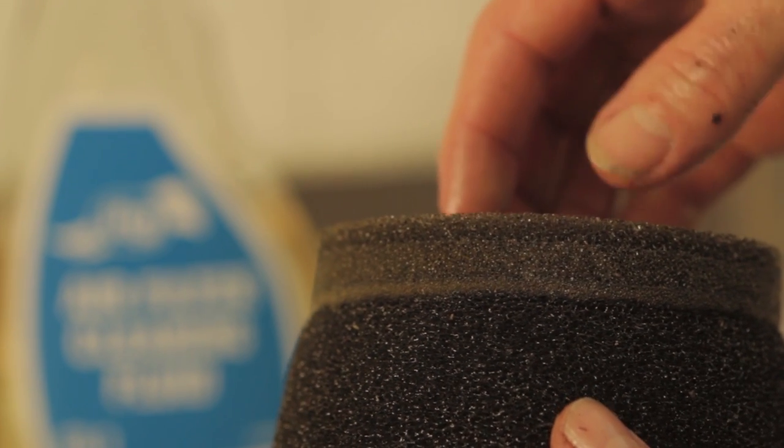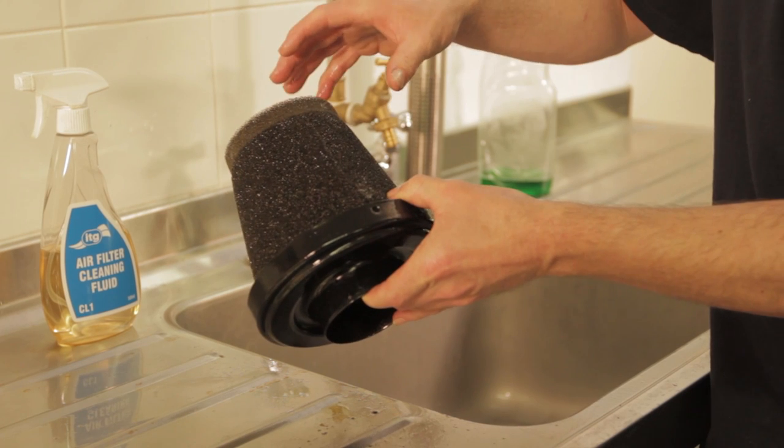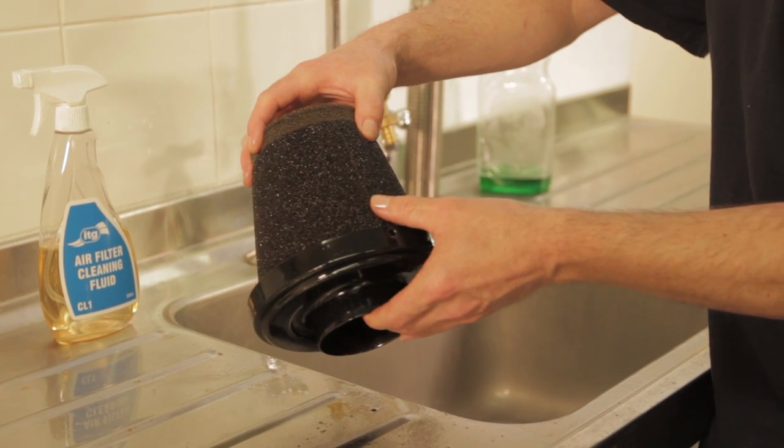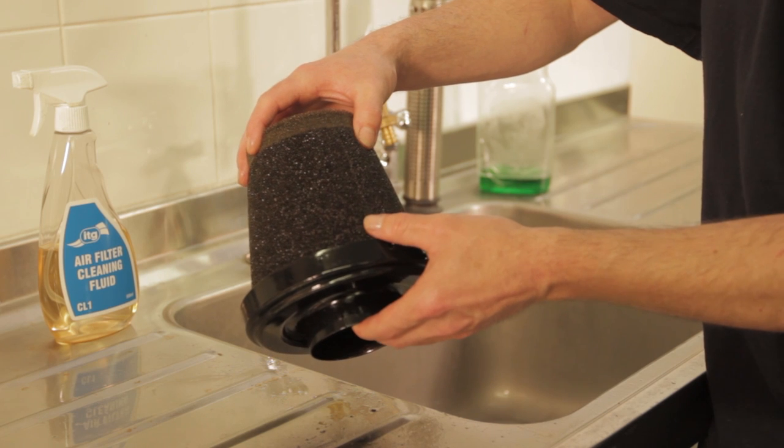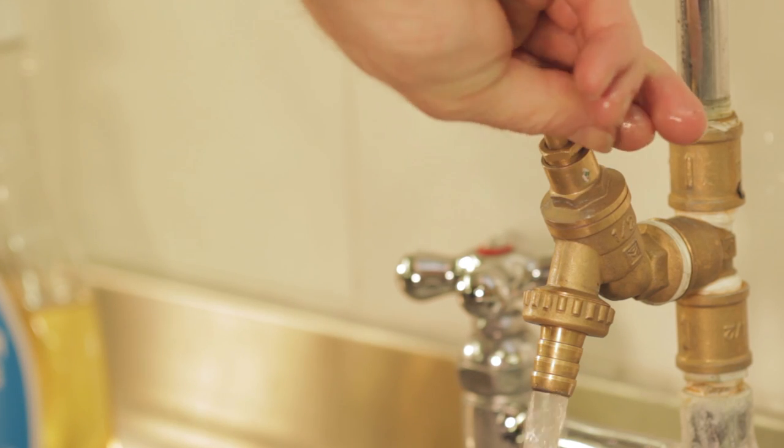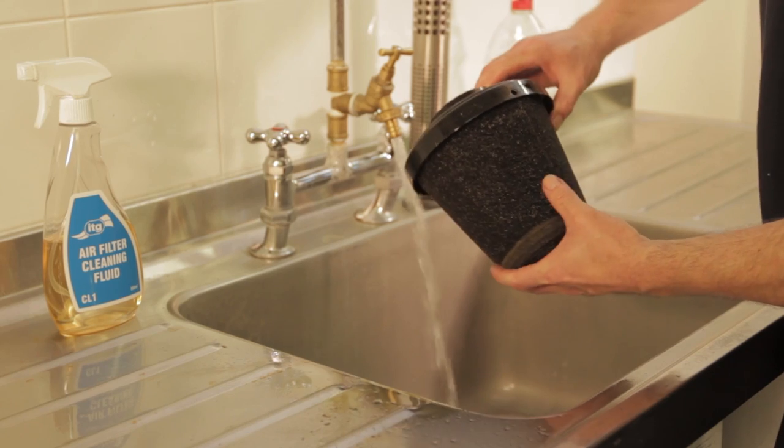It's always a good idea to try and back flush through with water coming from the clean side outwards, so from the fine side outwards. This will help take as much of the dirt and debris through as possible. The easiest way to do that is to run it under a tap and run the water through from the inside of the filter outwards.